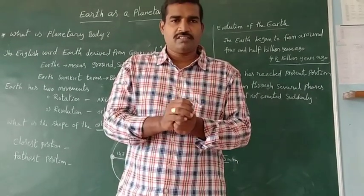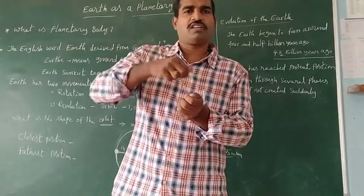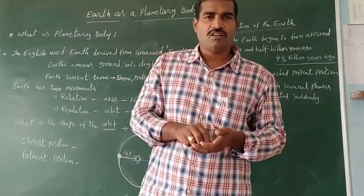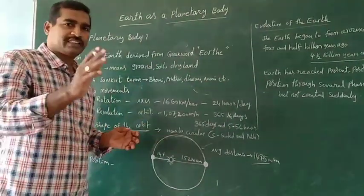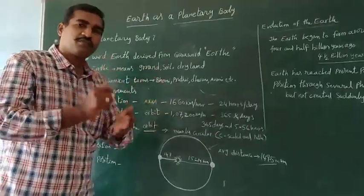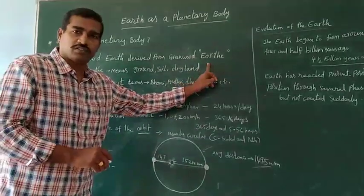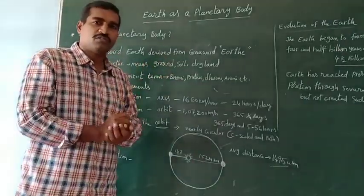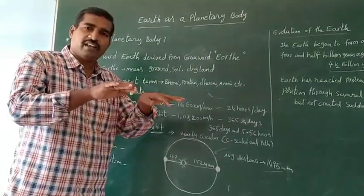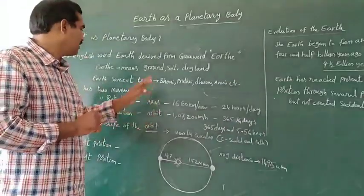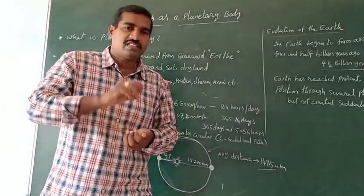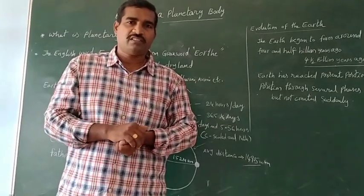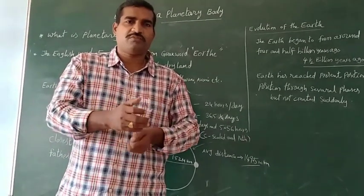Our Earth has its revolution and rotation in a specific direction. The word Earth is derived from the Greek word 'Aropt'. The meaning of Aropt is ground, soil, and dry land. Earth in Sanskrit has meanings such as Rudvi, Dharani, Avani, and Bhumi.